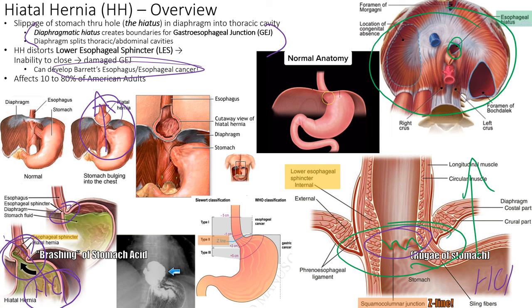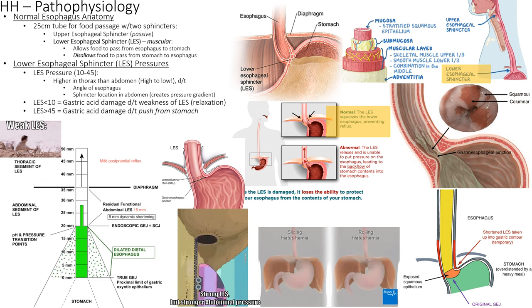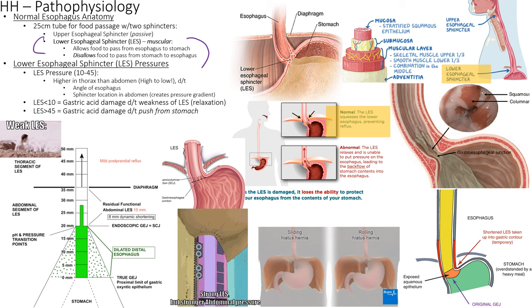The esophagus is a 25-centimeter tube with two sphincters — the lower esophageal sphincter being where most disease processes occur. The esophagus must squeeze food into the stomach because thoracic pressure is higher than abdominal pressure. If someone is obese or has increased intra-abdominal pressure, it's harder to squeeze effectively and contents may be pushed upward through the hiatus, causing a hiatal hernia.